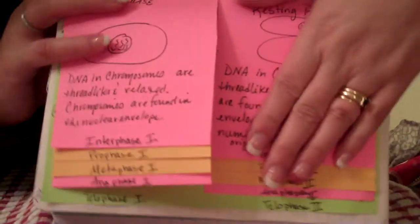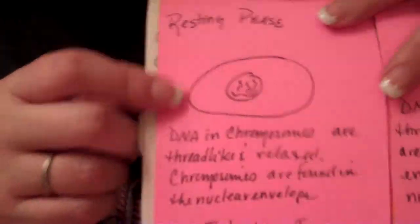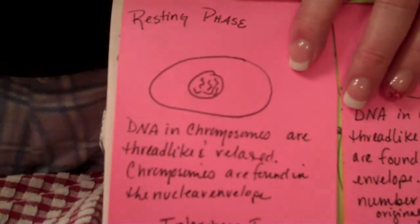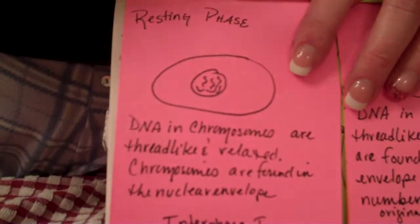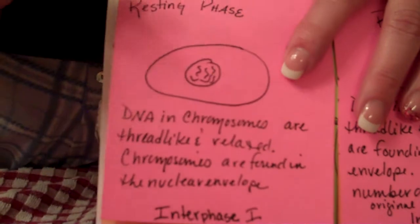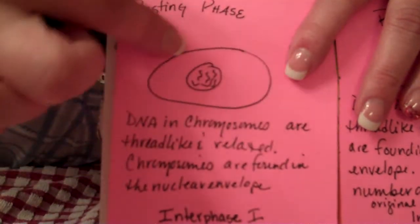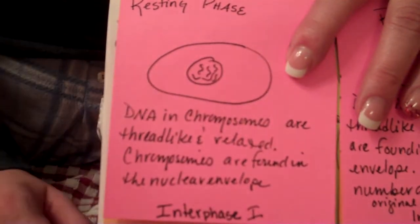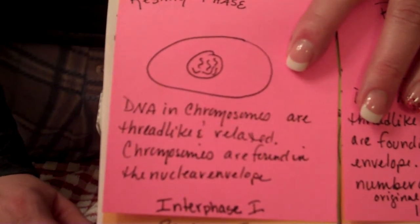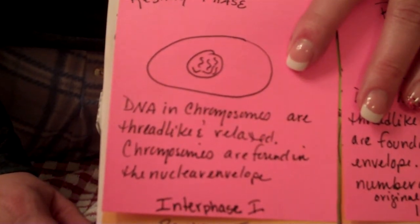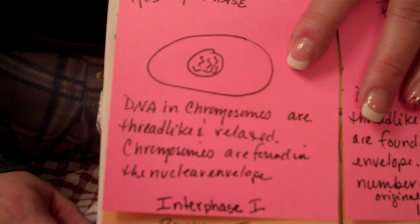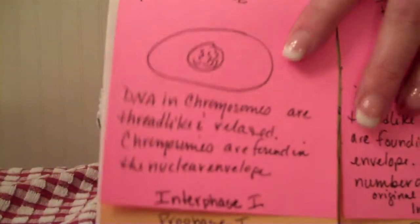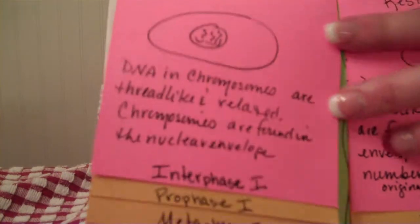We only want to look at this sign right here — Interphase 1. Interphase 1 is a resting phase. Here you've got the cell, you've got the DNA that's in the nucleus. It says the DNA in the chromosomes are thread-like and relaxed. Chromosomes are found in the nuclear envelope. I'm reading upside down, so it's hard — I'm going to have to come around here.